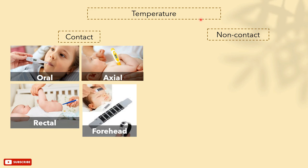Forehead strips use liquid crystal thermometers. They contain heat-sensitive or thermochromic liquid crystals in a plastic strip. These crystals change color to indicate different temperatures. It is an old method that is not usually used anymore nowadays.